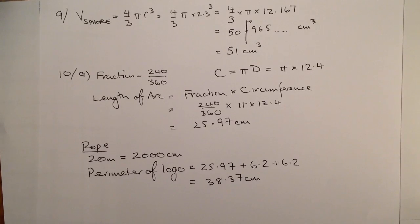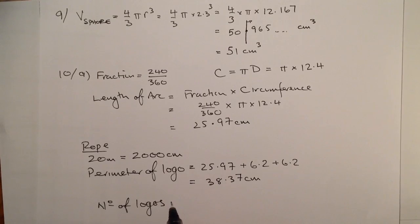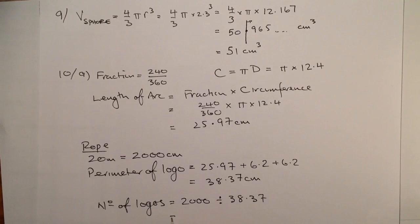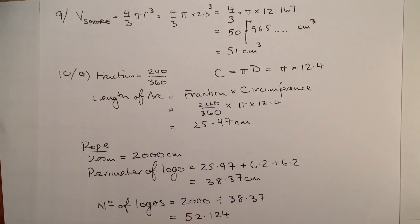From there I work out the number of logos that can be made. The number of logos is the length of the rope divided by the distance around one logo: 2000 ÷ 38.37, which gives 52.12 on the calculator. Since that's 52 and a bit, he can make 52 complete logos.